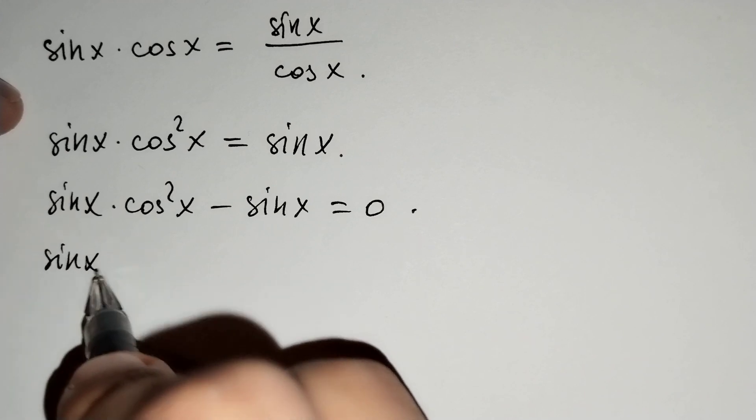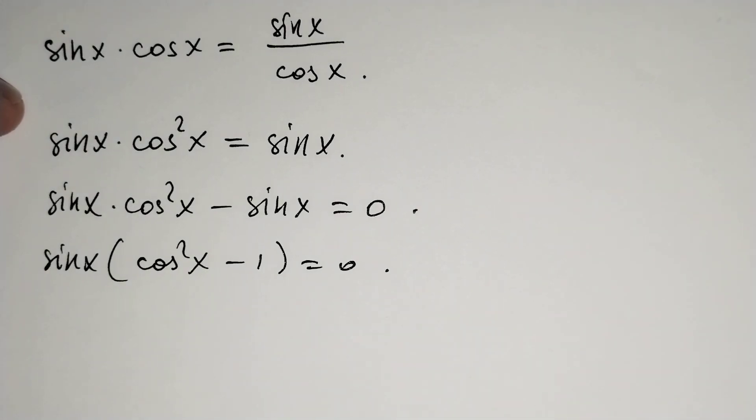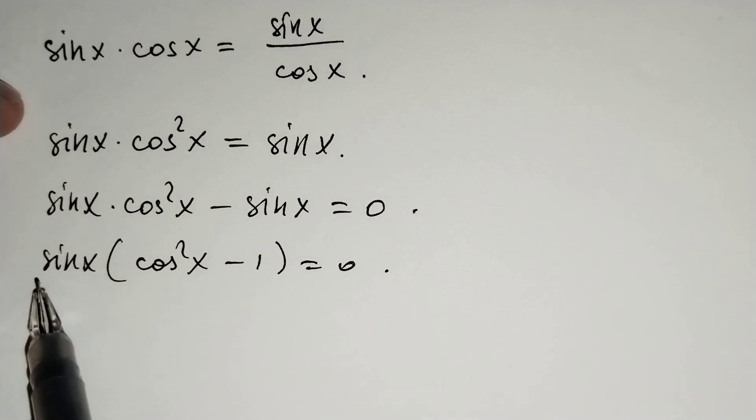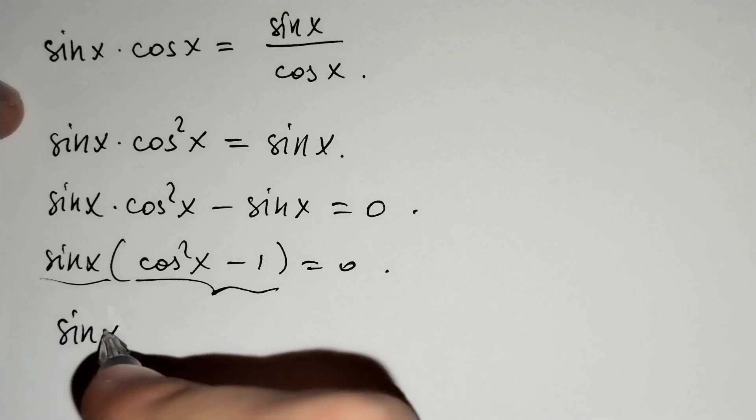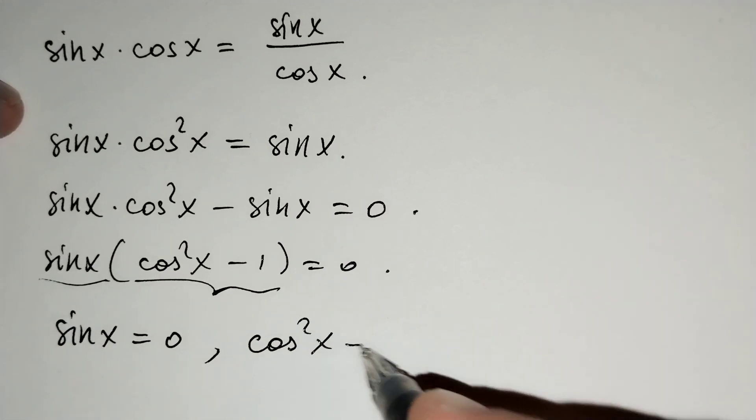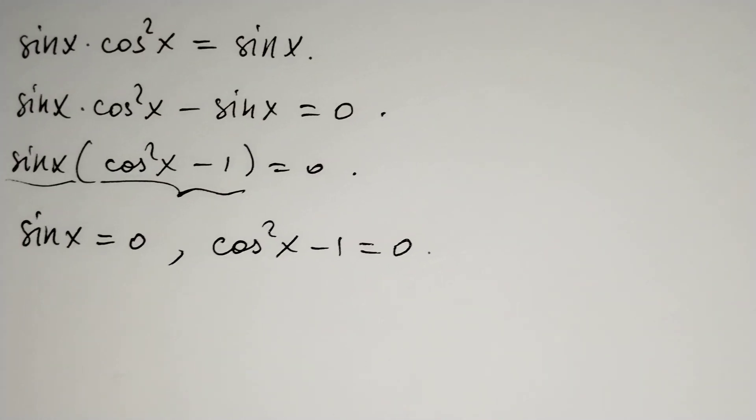sin x times (cosine squared x minus 1) equals 0. For the product to equal 0, at least one of the factors must equal 0. So sin x equals 0.